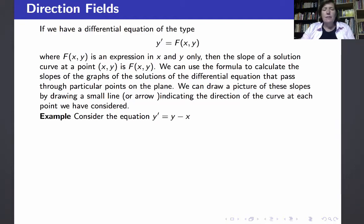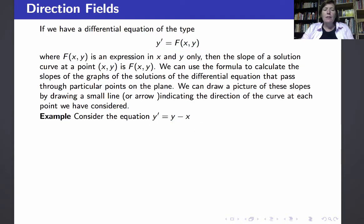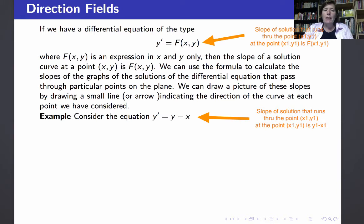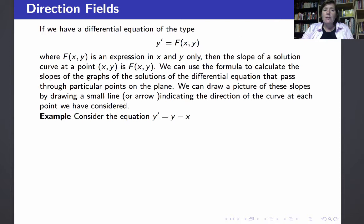If we have a differential equation of the type where y prime is some function of x and y, then the slope of a solution curve to this differential equation at any given point x, y in the plane is f of x, y. In other words, the slope of a tangent line to the function is given by this formula f of x, y, and we can use the formula to calculate the slopes of the graphs of the solutions of the differential equation for any particular point on the plane that we choose.